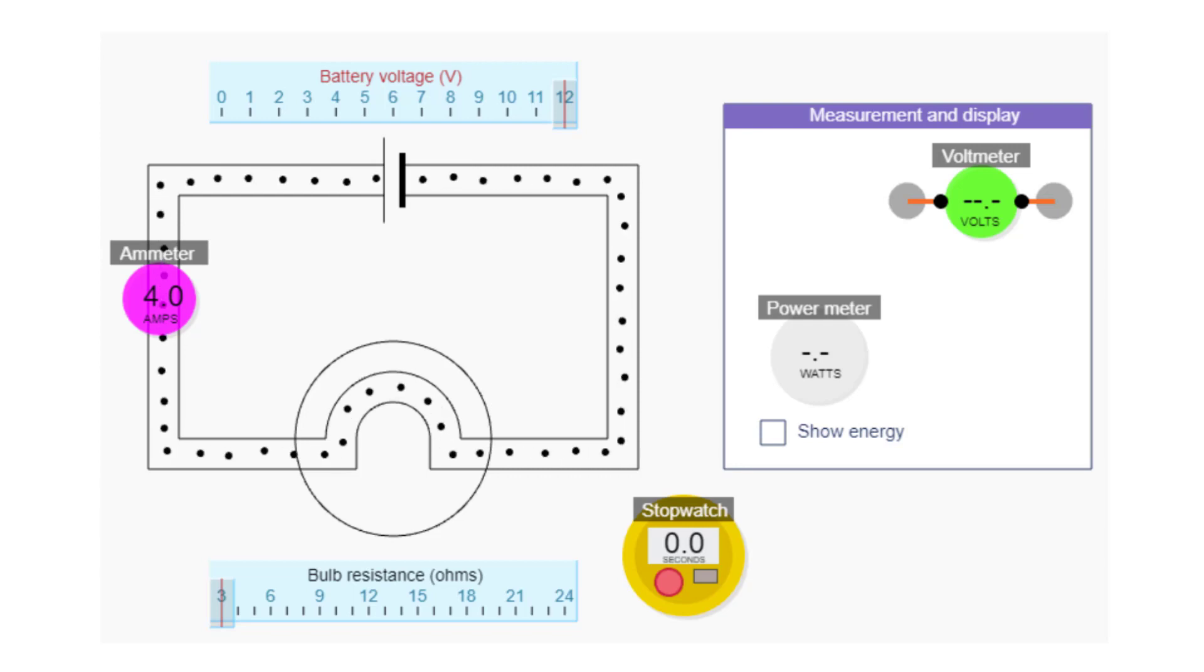Each ampere of current is one coulomb of charge per second. So here the current is four amperes, which means four coulombs of charge enter the ammeter every second.